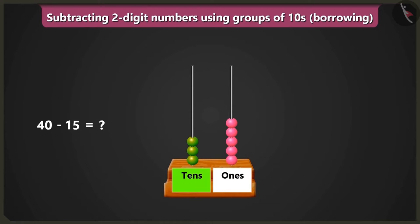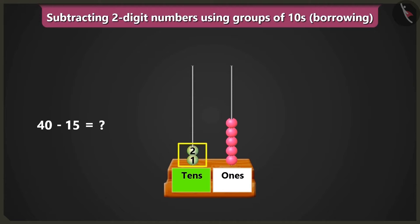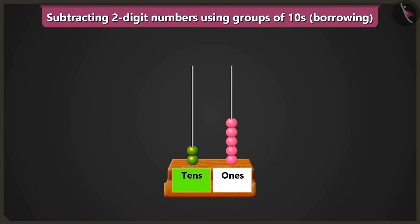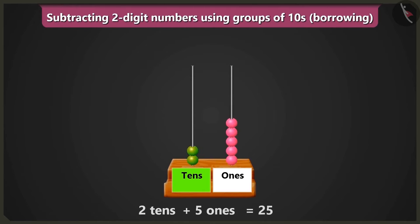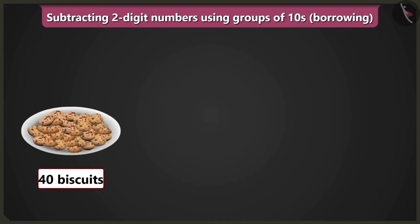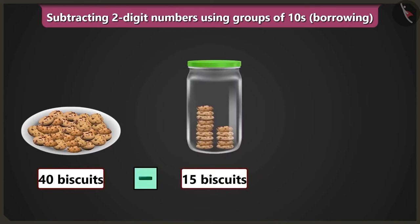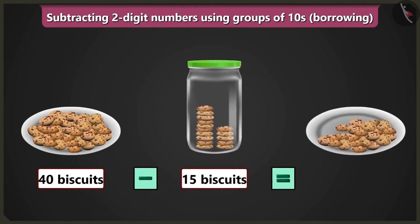Now we will subtract in the box of tens. If we remove one bead from three beads, then two beads would remain, which means two tens. So now two beads remain in the box of tens and five beads remain in the box of ones. It will be two tens plus five ones equal to twenty-five. So if we fill the jar with fifteen biscuits, then twenty-five biscuits would remain in this plate.